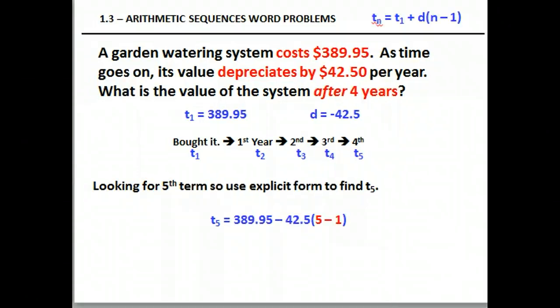Now when we look at this, we have to plug our numbers in. t sub 1 is $389.95 minus its depreciation, $42.50. n is 5, so 5 minus 1 is going to be 4. So it's going to be $389.95 minus 42.5 times 4. Pause now and do the math, then check your answer in a moment.